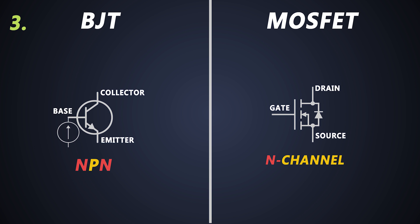BJT is a Current Controlled Device, whereas MOSFET is a Voltage Controlled Device. That means the amount of voltage provided at the Gate of the MOSFET determines the amount of current flowing from Drain to Source. It is like a driving force to turn ON the MOSFET.